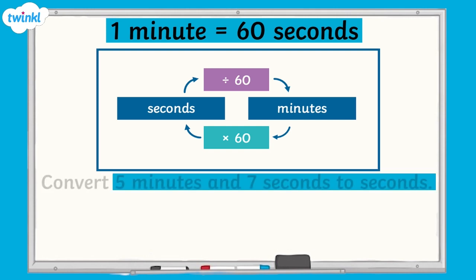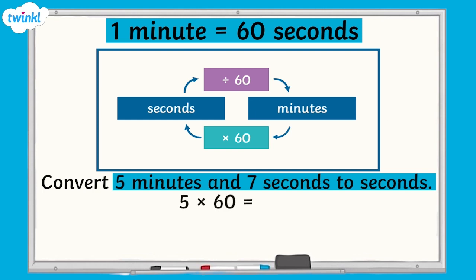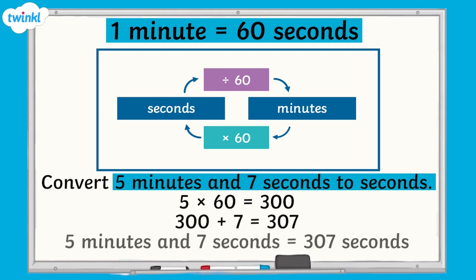To convert 5 minutes and 7 seconds to seconds, we would multiply 5 by 60, which equals 300 seconds, and then add on the 7 seconds. 5 minutes and 7 seconds equals 307 seconds.